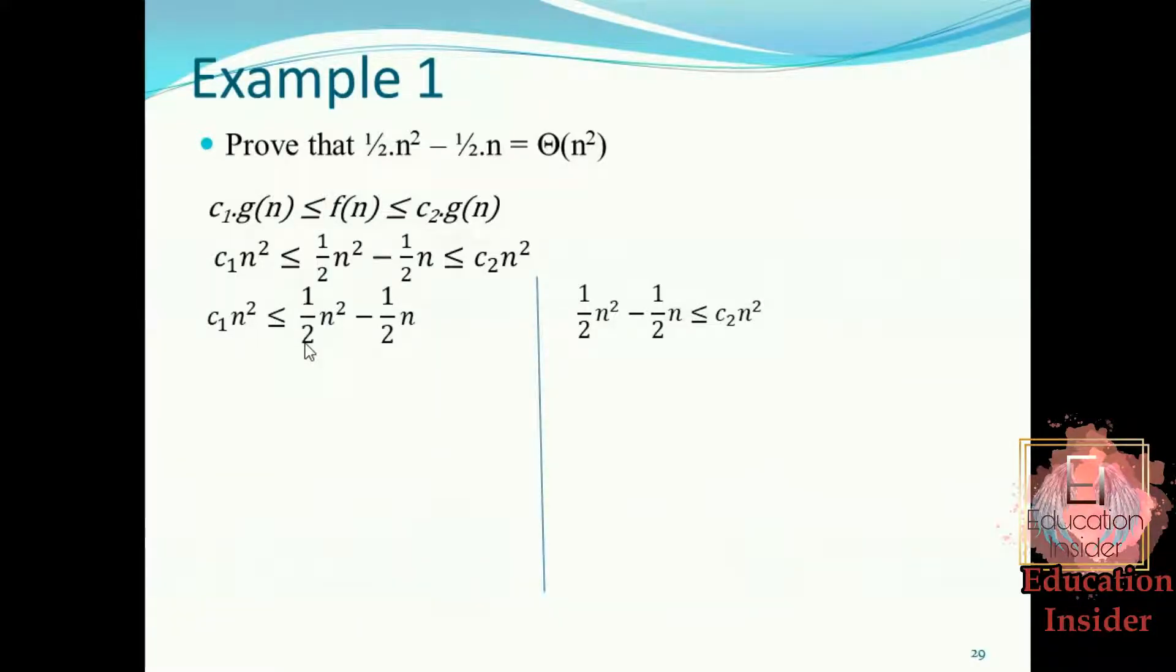So if we populate c₁ value into this inequality, we will be getting something like this, and after doing some algebra we will be finding out n₀ value as 2. So we have proved big Omega notation. Now we need to prove this big O notation.